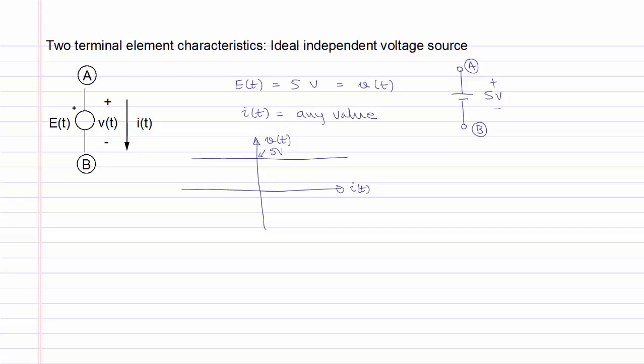Note that the value of the source is a constant 5 volts, and the current through that source can be anything, depending on what else is connected to the source. If the value of the source changes with time — for example, E of t is equal to 5 sine of t — then once again, the value of the source is specified, and the current through the element can be any value, depending on what else is connected to the source.